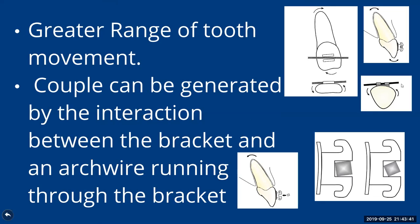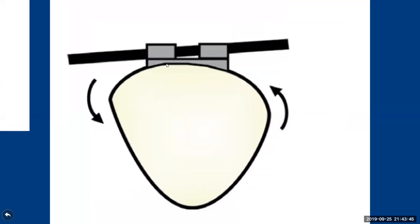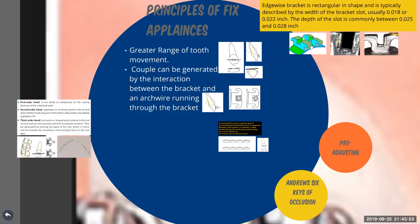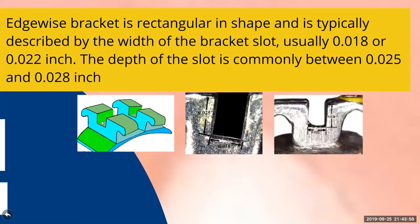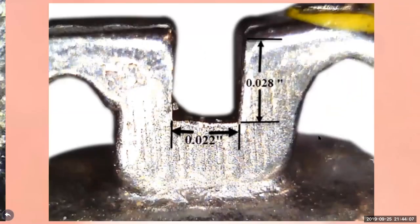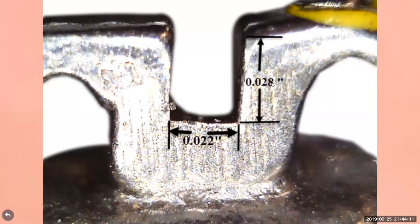To generate a moment, we use a rectangular wire because in the rectangular wire fitting within the slot of the bracket, it is capable of generating enough moment for any kind of movement. For rotation, the arch wire passes through the slot according to the width of the bracket. The slot is the gap between the wings of the bracket. The cross-sectional diameter of the slot varies — it may be 0.028 inch (28 mil) or 0.022 inch (22 mil) in height.